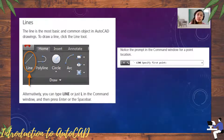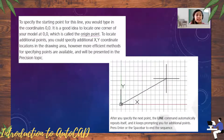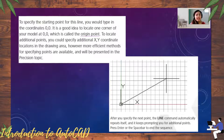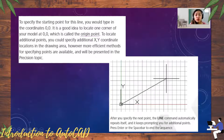Notice the prompt in the command window for a point location. For the line, you need to specify the first point. To specify the starting point, type the coordinate '0,0'. It is a good idea to locate one corner of your model at 0,0, which is called the origin point. After you specify the point, the line command automatically repeats, prompting you for additional points. Press Enter or the space bar to end the sequence.